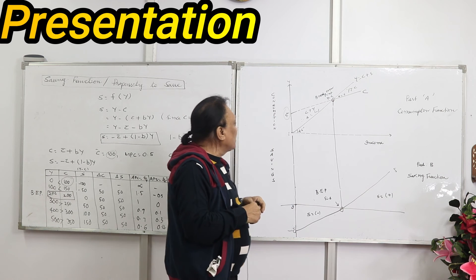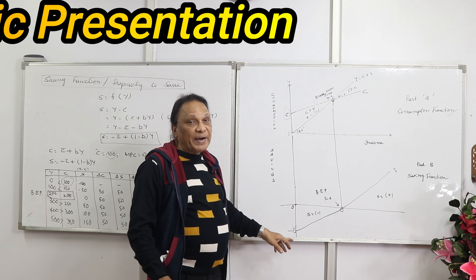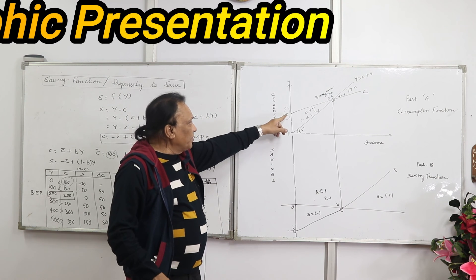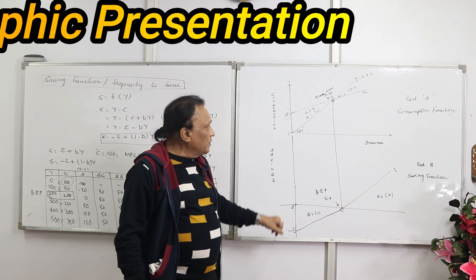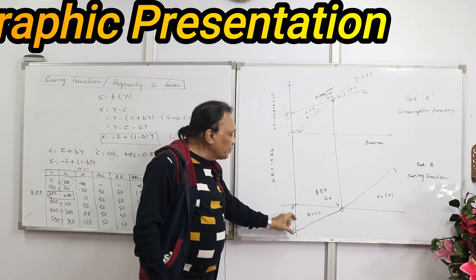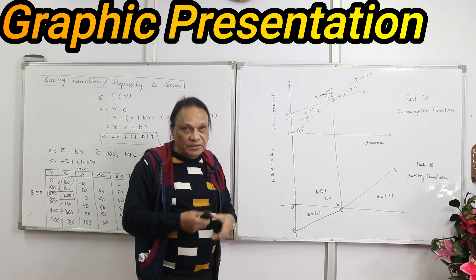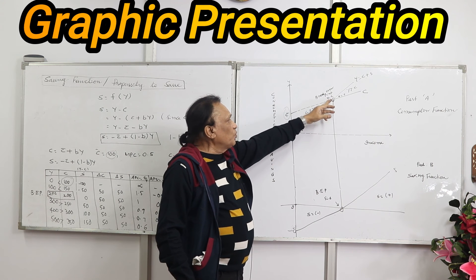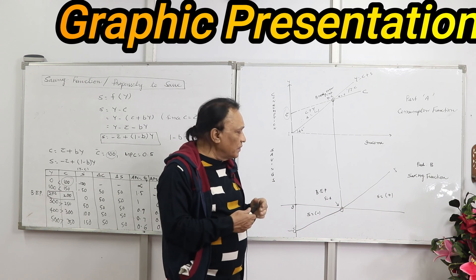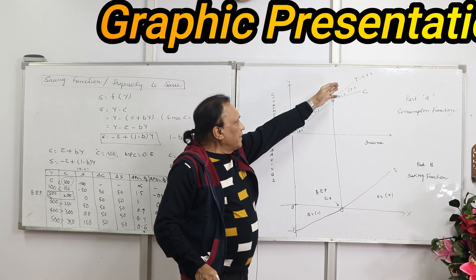A stage comes where both lines intersect — that is the break-even point. After the break-even point the income line is above the consumption line, so savings are positive. The saving curve is derived from the consumption curve. When autonomous consumption is C̄ = 100, savings are −100, so the saving curve starts at −C̄ on the y-axis — below the x-axis. As long as consumption is greater than income, the saving curve is below the x-axis. At the break-even point savings are zero, so the saving curve intersects the x-axis.